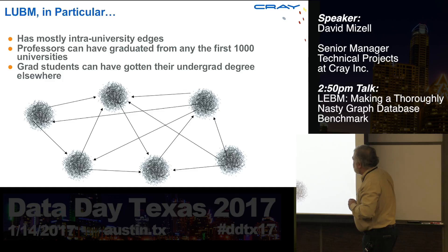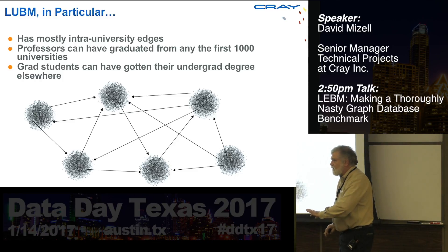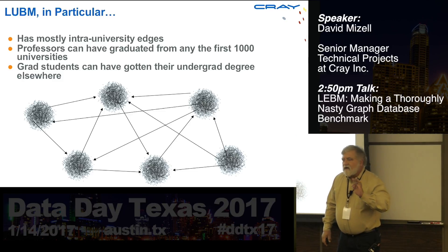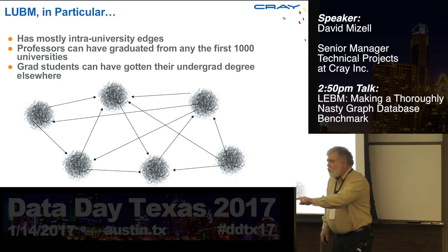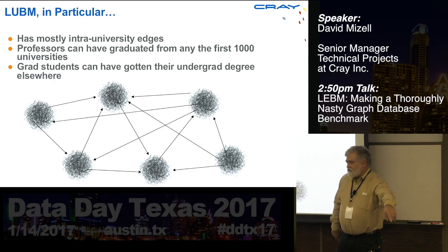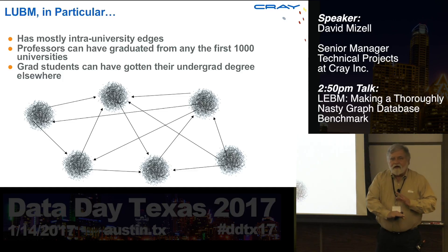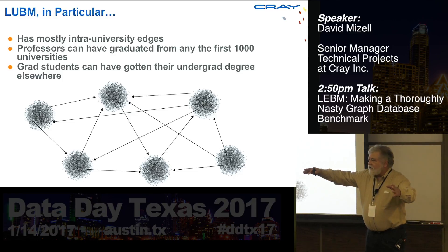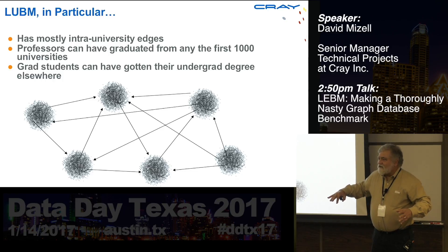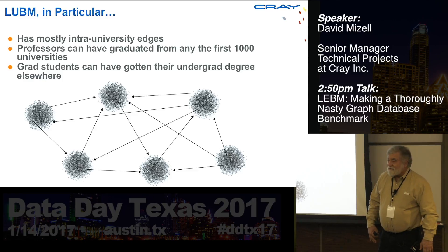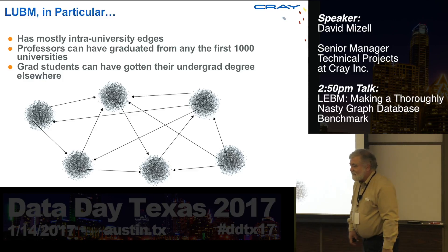Most of the edges in the LUBM database are within a university. It looks pretty relational — this teacher teaches this class. There are just a few links between universities; the only one I remember is that you can look up which university a professor got his or her degree from. I've seen a company — not to be named — take 10,000 LUBM universities, ignore the inter-university links, and then brag about how fast they were running LUBM queries. Might as well just use one and multiply by the number of processors you have.